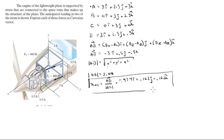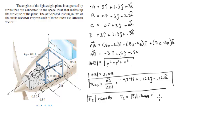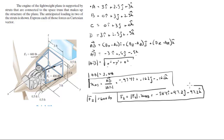This unit vector, multiplied by the 600 pounds for force F2, gives you the Cartesian vector form of the force. The magnitude of F2 is given as 600 pounds, so the Cartesian vector is the magnitude multiplied by the unit vector, which comes out to be negative 584i plus 97.2j minus 97.2k.